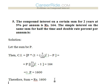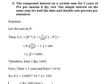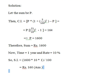So the sum is Rs. 1600. For simple interest on the same sum for half the time and double the rate: rate becomes 10% and time becomes 1 year. SI = 1600 × 10 × 1 / 100 = Rs. 160.